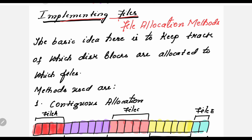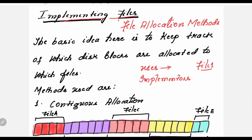What exactly implementing files means is — we can classify users into two types. The first type are users who are just creating or using files and are only worried about what name to give and what operations can be performed. But for implementers, the main task is how these files get stored. For example, I create a file called file1 and it gets saved to disk. What method is used to store this file on disk? Those methods come under implementing files or file allocation methods. The basic idea is to keep track of which disk blocks are allocated to which files.